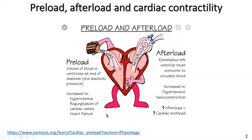A different topic altogether is regurgitation of cardiac valves. If we take the left ventricle and the aorta — if the aortic valve was to be leaky, then blood would leak back into the ventricle during diastole when the heart was relaxing. That would cause an extra stretch on the heart during diastole, and that heart would then be challenged to try and increase its output on the next pump. That doesn't work very well for people with heart failure, and that's an example of preloading that heart with too much fluid simply because the cardiac valve is a leaky valve.